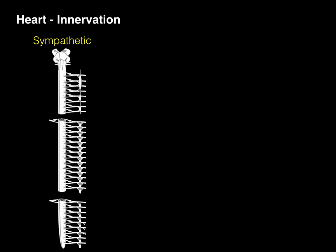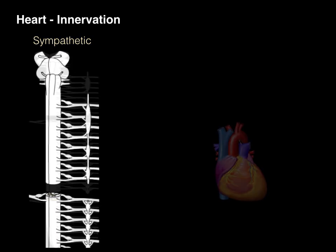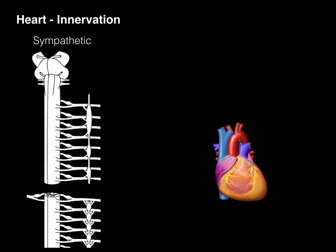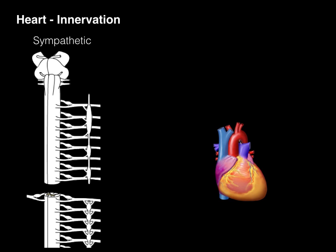To cover the sympathetic nervous system, here's the whole CNS, and we're going to focus down on the area that controls the heart. The sympathetic innervation is going to increase heart rate and increase the force of contraction. As with all sympathetic innervation, it arises between the T1 and L2 spinal cord levels, and with the heart specifically T1 to T4, sometimes T5 as well. For simplicity, I'll just use T1 to T4.